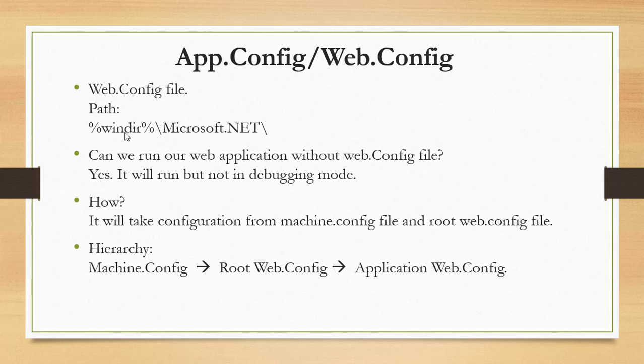Even if an application doesn't have a web.config file, it can still run — however, you cannot run it in debugging mode. In that case, it takes configuration from machine.config and the root web.config. The configuration hierarchy is: machine.config at the top, then root web.config, then your application's web.config.